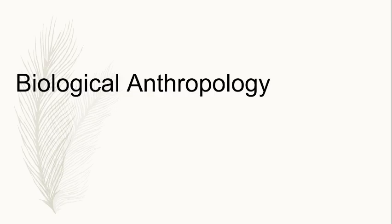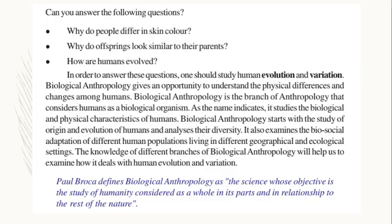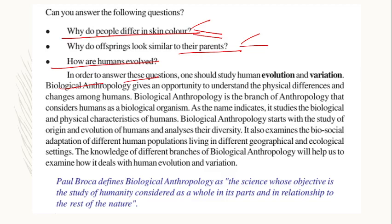Let us begin with Biological Anthropology. Consider these questions: Why do people differ in color? In India we see a wide variety — black, white, yellow — and even our gods like Krishna were given a blue skin. Why do offspring look similar to their parents? How has the human evolved? What is the theory of evolution — and who is the author of 'Origin of Species'? Write your answer in the comment section. These questions are dealt with by Biological Anthropology.